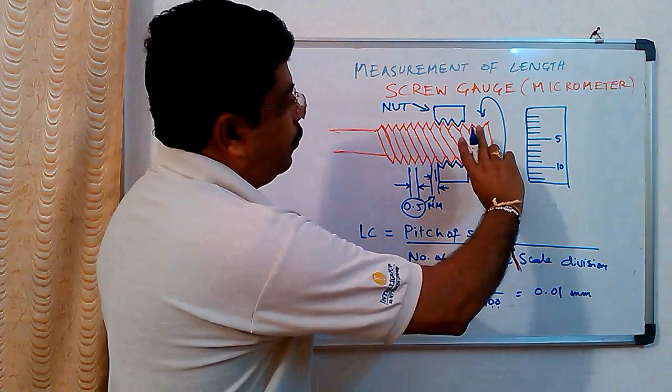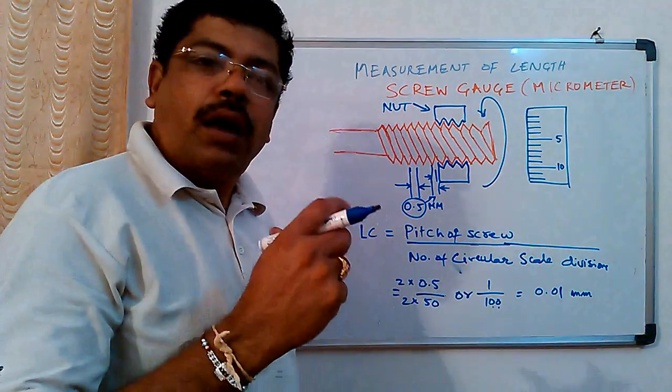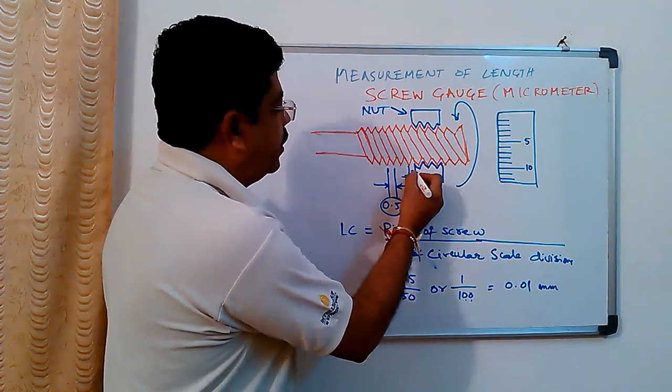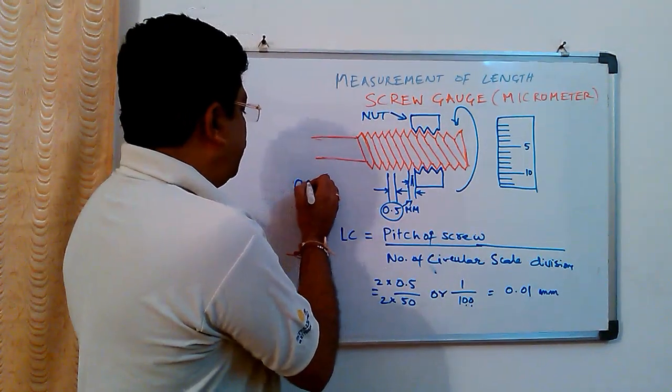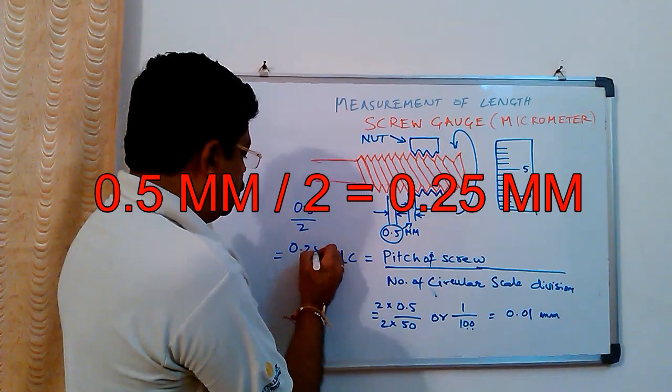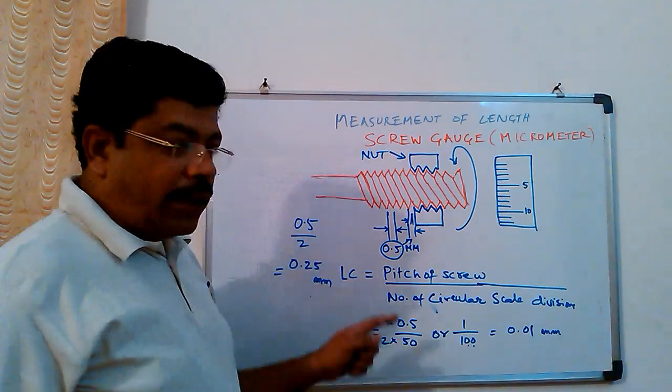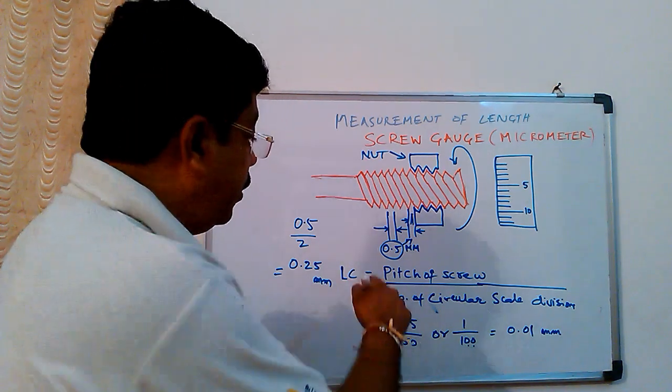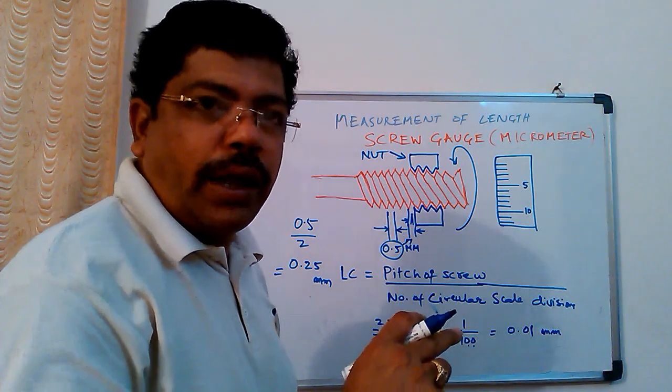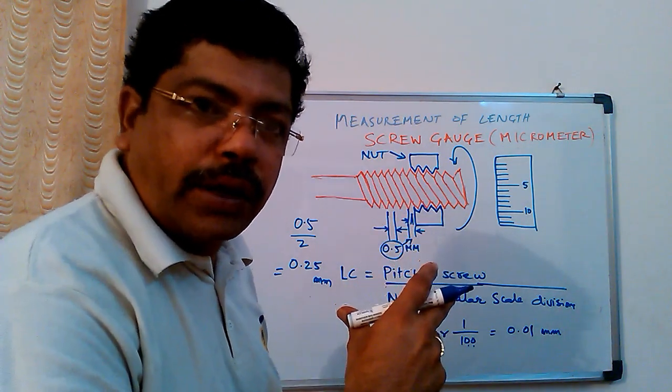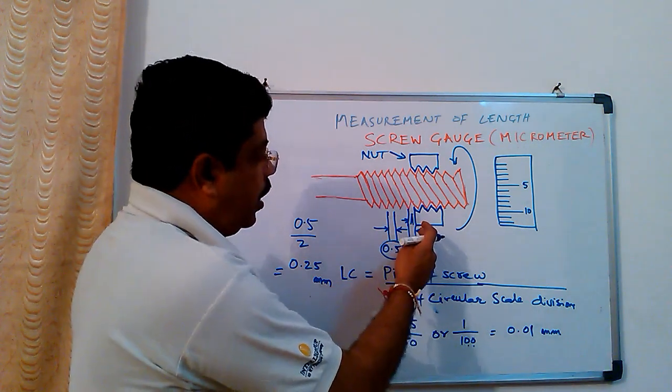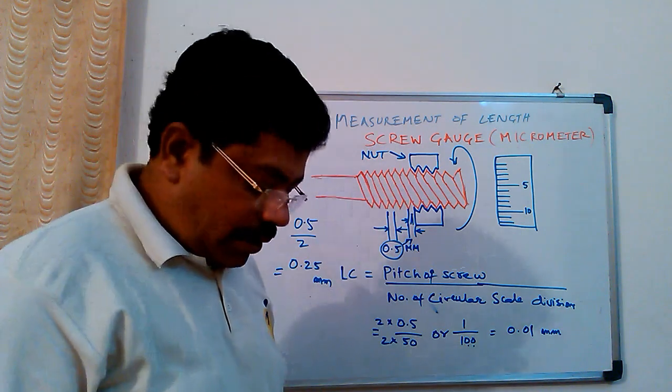Supposing if you turn this nut by half round, only half round, then the distance moved by this nut will be 0.5 by 2 which is equal to 0.25 mm. Like that, if the number of turns or the amount of turn you rotate for this particular nut is equal to the distance travelled by the nut.